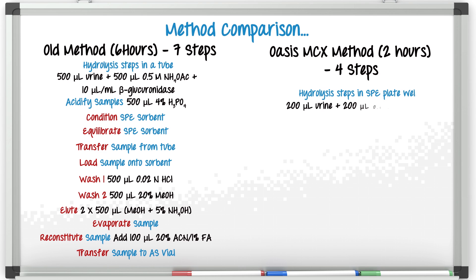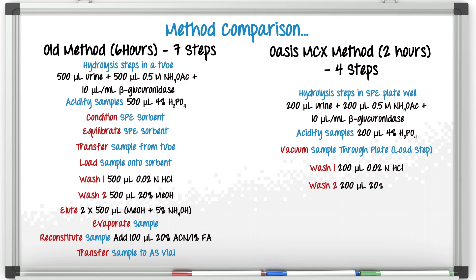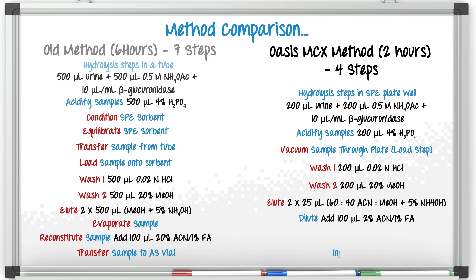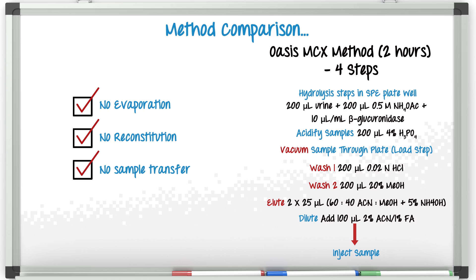Using this new method, we do all of our hydrolysis and incubation within the wells of the microelution plate. Then when that's done, we simply use vacuum and load them right onto the sorbent in the plate. We do our washes using a multi-channel pipette so it's really, really fast, and then just directly elute into the autosampler plate. A simple dilution and we're ready to go — no evaporation, no reconstitution, and no more transferring of the samples.